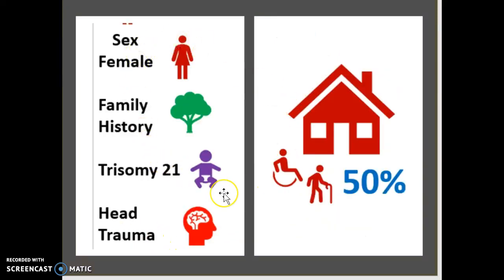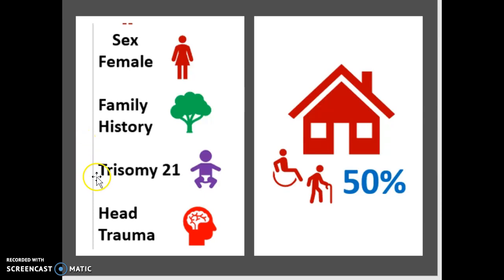When it comes to characteristics and traits of people with Alzheimer's, it actually affects women more — it's more dominant and more present in women. It affects people who have a family history of Alzheimer's or dementia, such as an aunt or uncle. If there is a trisomy 21 when the patient is still a baby, or if there has been any significant head trauma in the past, this could trigger Alzheimer's. Notably, 50% of people in retirement homes are dealing with Alzheimer's or dementia, mainly because Alzheimer's does not start to form until over the age of 65.